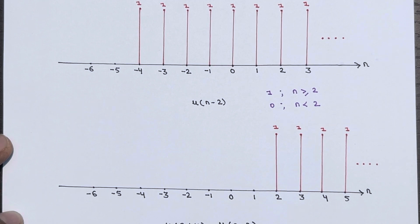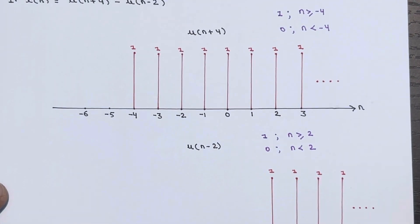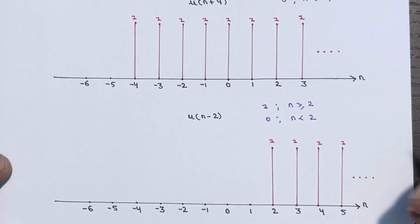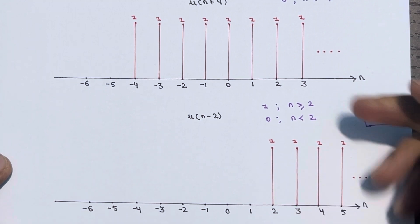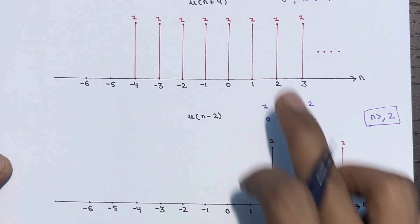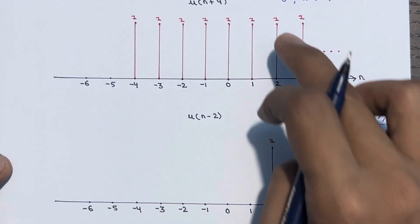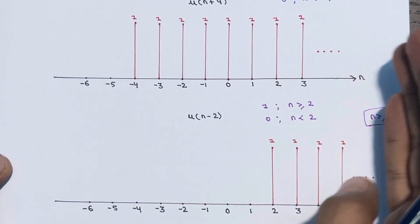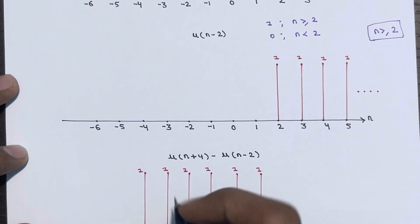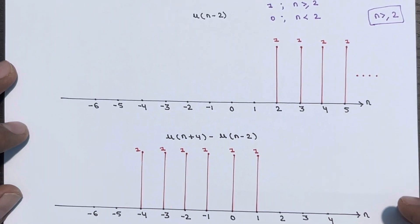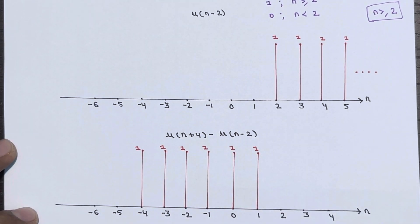In our question, x of n is basically u of n plus 4 minus u of n minus 2. The common instances are from n greater than equal to 2. When you subtract these two, at n equal to 2 the amplitude will become 0, and going forward the amplitude will also be 0. So if you plot the final graph for x of n, it will exist from n equal to minus 4 to n equal to 1.